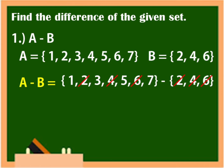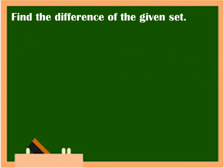What are the elements left in A? Those are 1, 3, 5, 7. Therefore, A minus B is equal to {1, 3, 5, 7}.